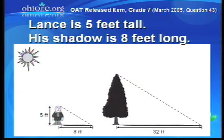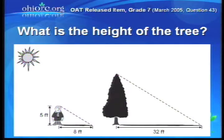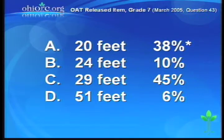We actually have a problem from one of the achievement tests in Ohio to illustrate that. This particular problem comes from the 2005 seventh grade Ohio achievement test and involves a student standing next to a tree. Lance is 5 feet tall, his shadow is 8 feet long. At the same time of day, a tree's shadow is 32 feet long. What is the height of the tree? There were four choices; choice A was 20 feet and 38% of our students in Ohio got this correct.